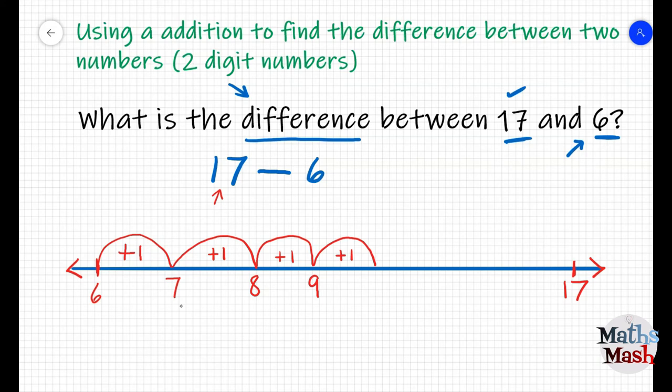Once you've hopped all the way to number 17, all you do then is add up all the hops. In this case, because we're jumping by one, it'll be pretty straightforward. You just add up all the hops one at a time. Pause the video here and see what you come up with.